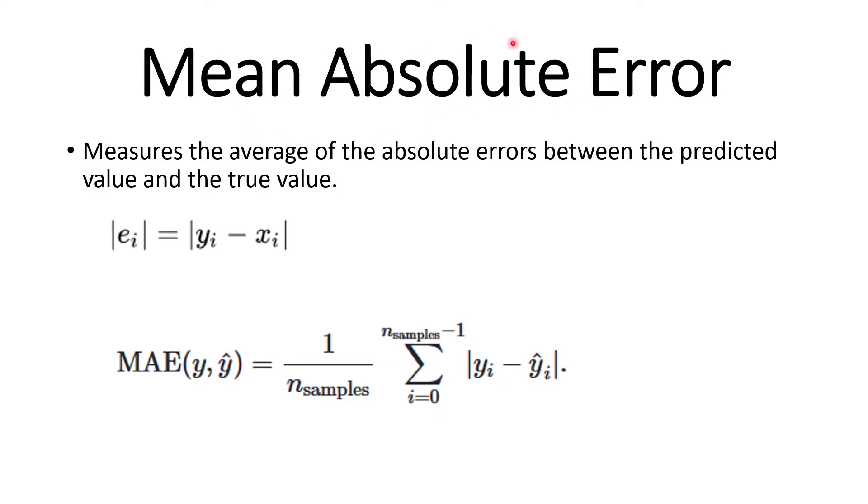Mean absolute error measures the average of the absolute errors between the predicted value and the true value. And this is the formula here for calculating mean absolute error: 1 divided by the number of samples, and then the sum of the true value minus the predicted value at this particular index. You get the absolute, you get the sum of that, and you multiply that with 1 divided by the number of samples.